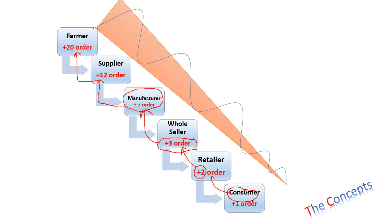The supplier then orders the farmer raw material for 20 products to be on the safe side. What is happening is that because of one extra order from the consumer — meaning the customer went from buying 12 packs to 13 — that one extra order led to a bigger increase at the retailer, then even bigger at the wholesaler, further bigger at the manufacturer level, further bigger at the supplier level, and even bigger at the farmer level. A small impact at one end led to a much larger impact at the other.